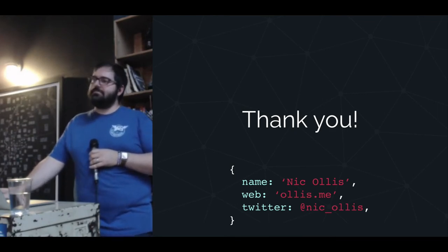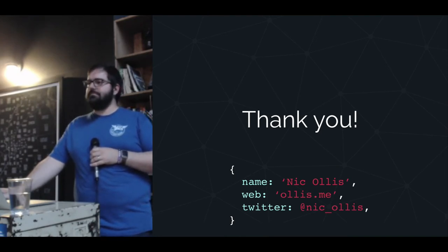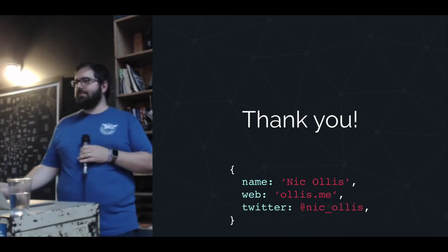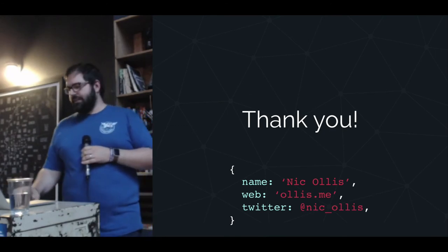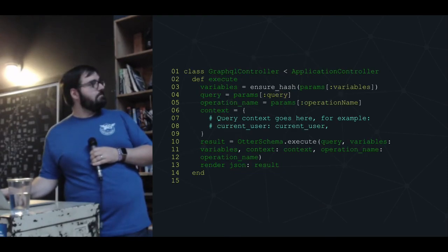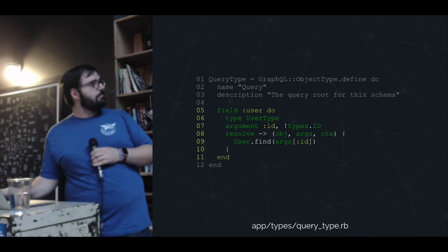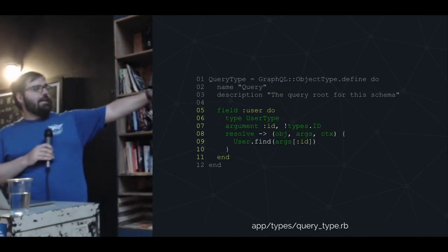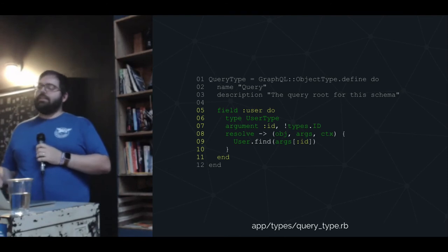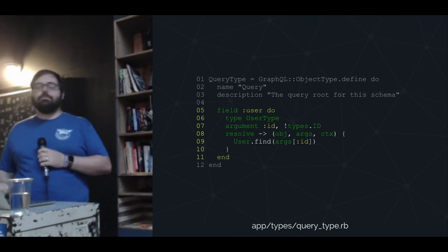How does GraphQL handle the database queries — are you trading REST calls for N+1 SQL queries? Inside the user type, it does just tie into the base user model. From there, it essentially calls anything you have defined in your main user model. You can make it more database-efficient.